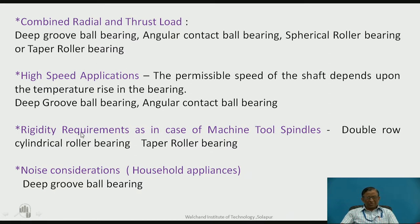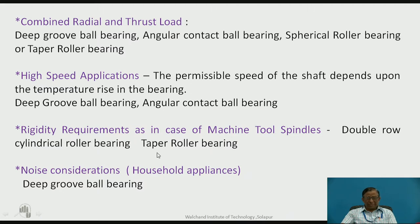Another important requirement in some cases is rigidity, particularly for machine tool spindles. Machine tool spindles are subjected to cutting tool forces acting in radial as well as axial directions, and deflection of the spindle is expected to be very less. For accuracy of machining, one can select double row cylindrical roller bearings or taper roller bearings. For noise consideration, particularly in household appliances or high speed applications, deep groove ball bearings are suitable.